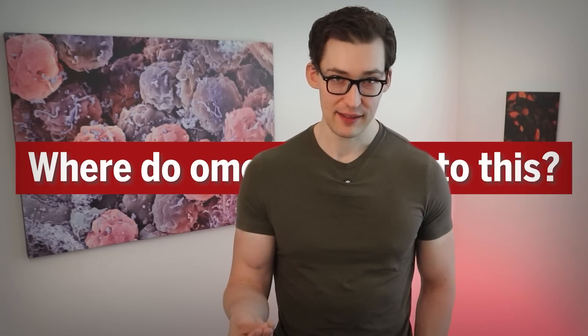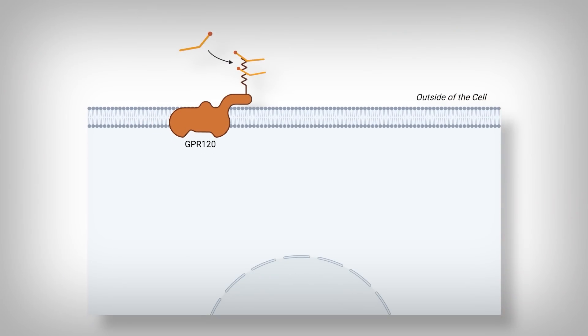Where do omega-3s fit into this? Aside from their direct effect on reducing fatty acid levels through the SREBP mechanisms we discussed, omega-3s also bind to a receptor called GPR-120. This receptor, when activated, inhibits inflammatory pathways that ultimately lead to the production of pro-inflammatory molecules known as cytokines. Since DAGs and ceramides aren't the only way the insulin receptor can be shut down — inflammatory cytokines can also bind receptors on the cell and cause similar inhibitions of the insulin receptor — if omega-3s bind GPR-120 and dissuade the production of cytokines, it can relieve the insulin receptor. The takeaway is that there are many mechanisms by which omega-3s affect our cellular health.